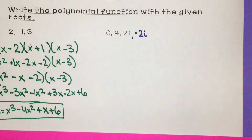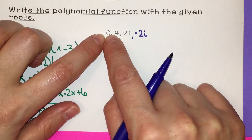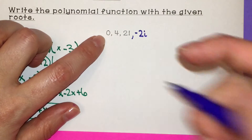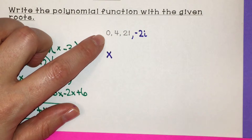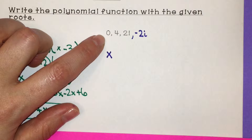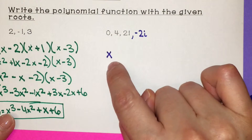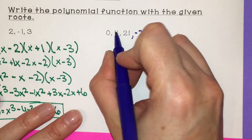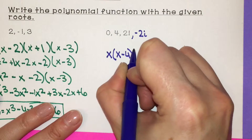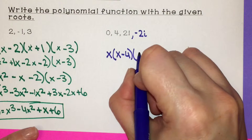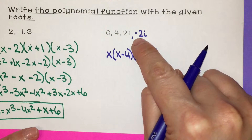Now I can identify all the factors. If x equals 0, then x itself is the factor. If x equals 4, the factor was originally x minus 4. And we have x minus 2i and x plus 2i as our factors from the imaginary roots.